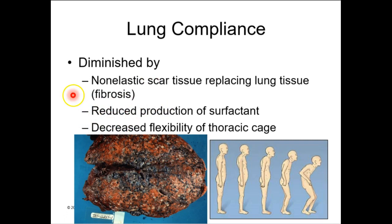As we age, we can also stop producing as much surfactant. If we develop osteoarthritis, spondylitis, or something impacting mobility of the joints in the thoracic cage, that can decrease lung compliance. Even developing kyphosis — a hunchback — decreases the amount the thoracic cage can change shape, and that decreases lung compliance.